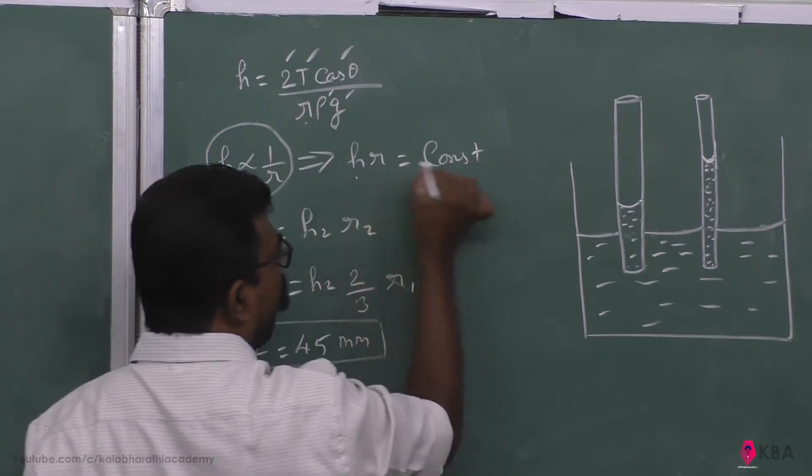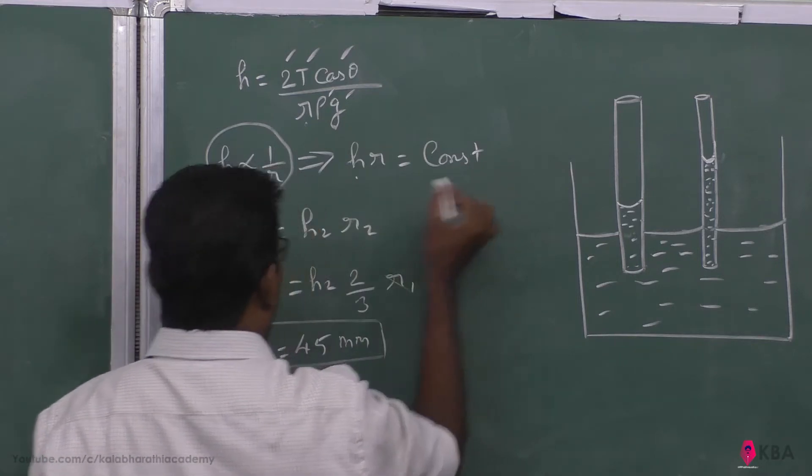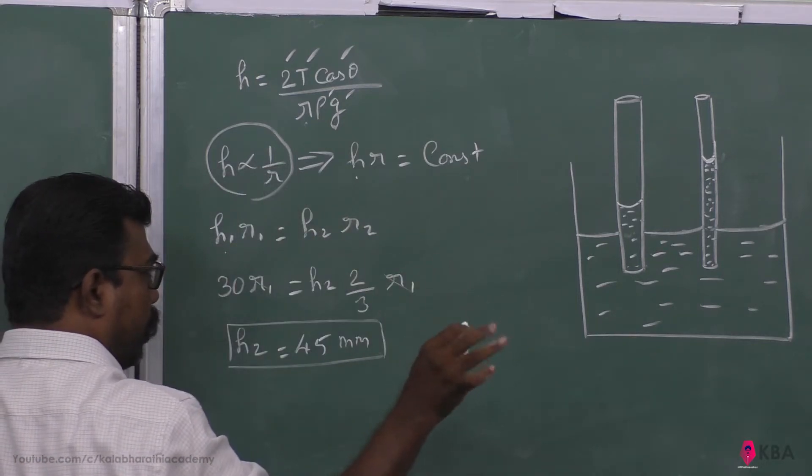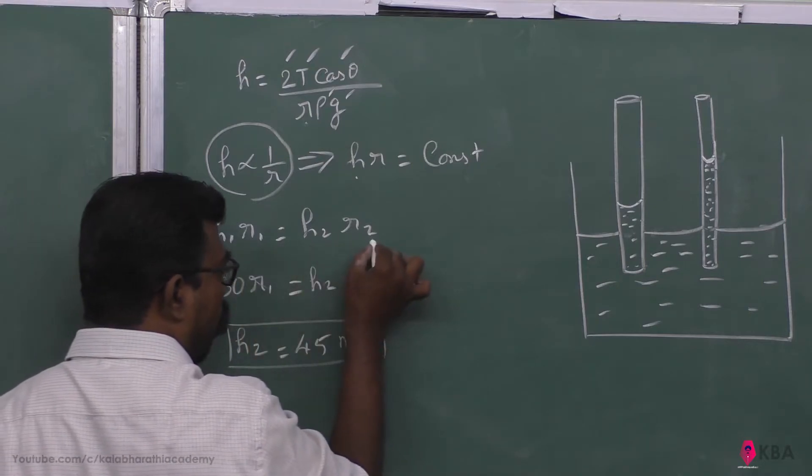Therefore h into r is equal to constant. Then h1 r1 is equal to h2 r2.